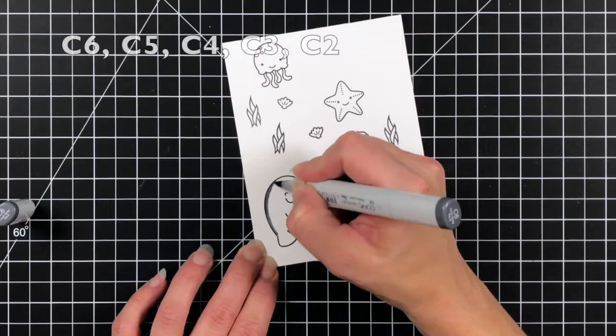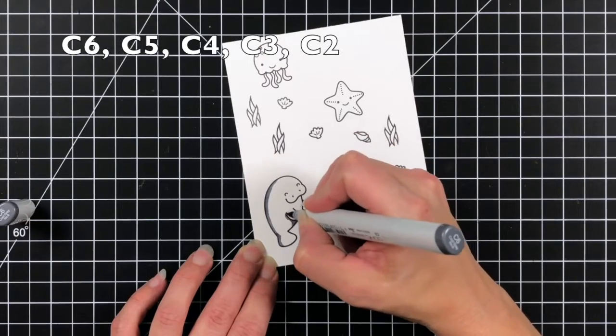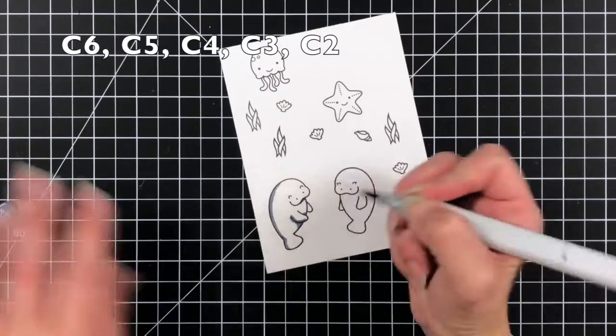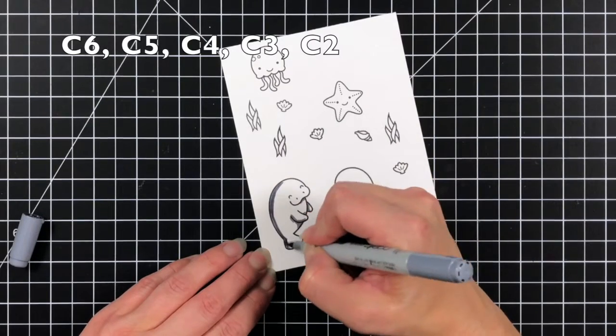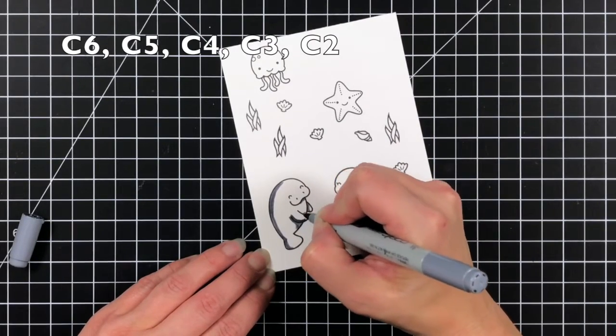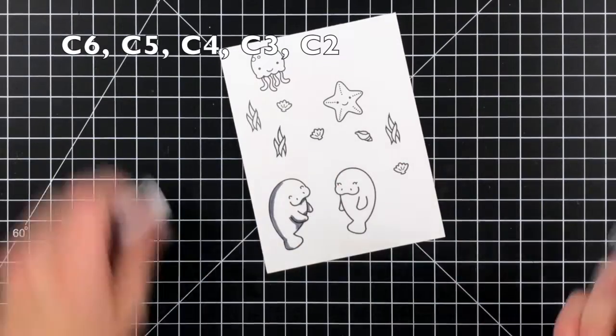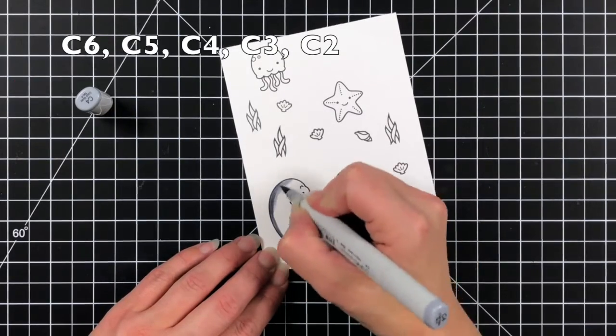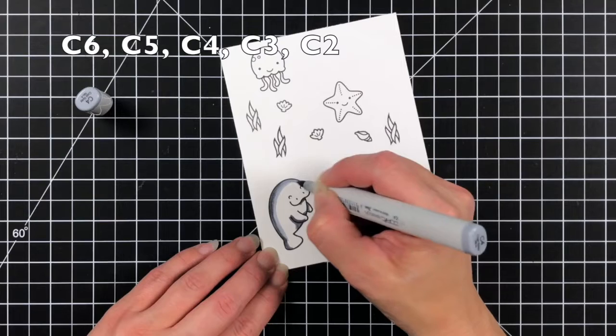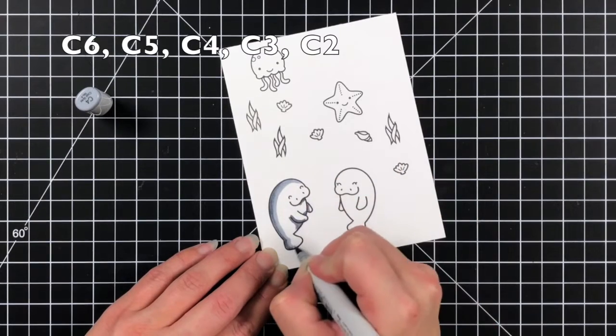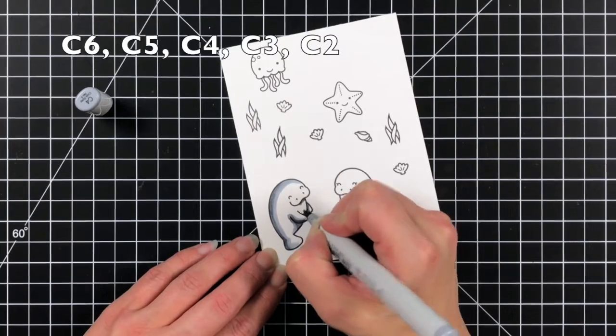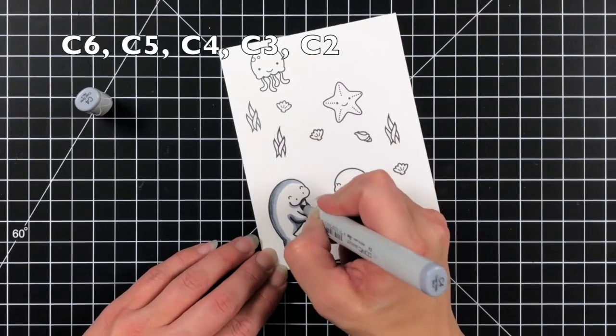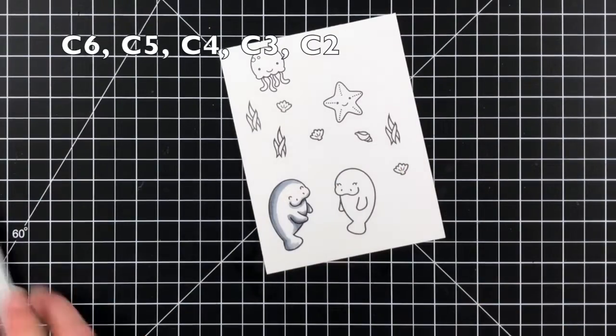The first thing I'm going to do to start my card is color up my little critters. The two stamps that I'm using today are Manateerific and then I also used some images from So Jelly. I stamped these on the Lawn Fawn white cardstock which is Copic friendly and I stamped them in the Lawn Fawn jet black ink which is also Copic friendly.